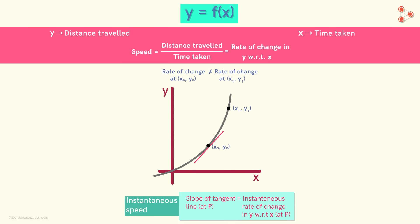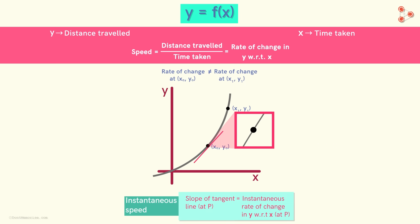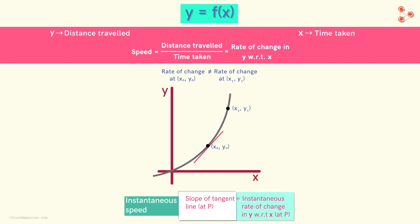To conclude: a very small portion of a curve around a point can be approximated by the tangent line at that point. The slope of this tangent line tells us the instantaneous rate of change of the function at that point.